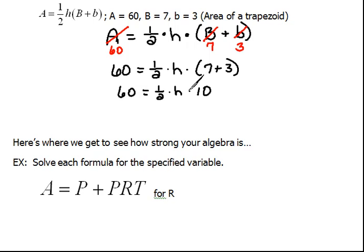Now, on the right-hand side, we have all multiplication. Multiplication, if you'll remember, is both commutative and associative. That means we can do it in any order we want to. It would be a lot easier to take half of 10 before we multiply by H. Half of 10 would be 5, so now we have 60 equals 5 times H. Continuing to solve for H, we would divide both sides by 5. So now we have 60 divided by 5 is 12. So we found that the height in this trapezoid has to be 12.